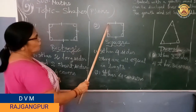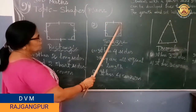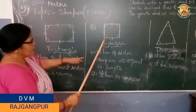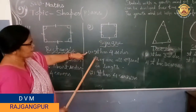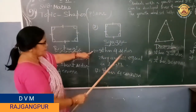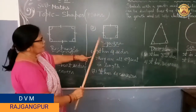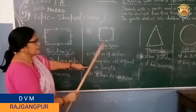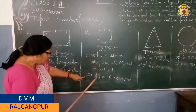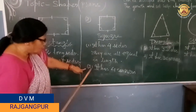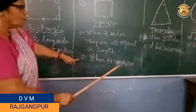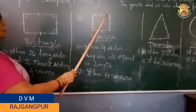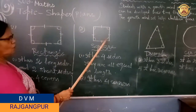And 4 corners: 1, 2, 3, 4. So the square has 4 sides — they are all equal in length — and 4 corners: 1, 2, 3, 4.